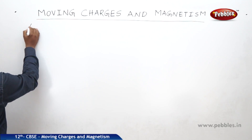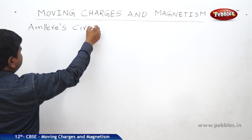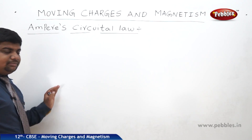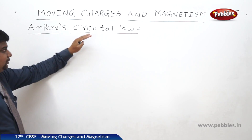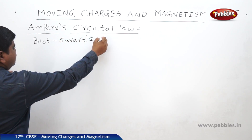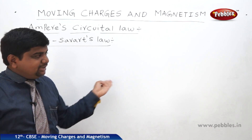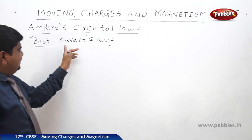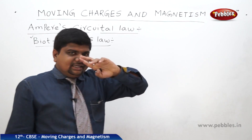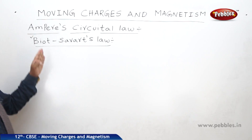Now we will see Ampere's Circuital Law and what is its meaning. Previously we discussed Biot-Savart's Law, which explains the magnetic field at a point from the source. It considers the linearity of the magnetic field — joining magnetic field points in a particular direction to create a straight line or wire. So at a point along that straight line, we calculate the magnetic field. That is Biot-Savart's Law.